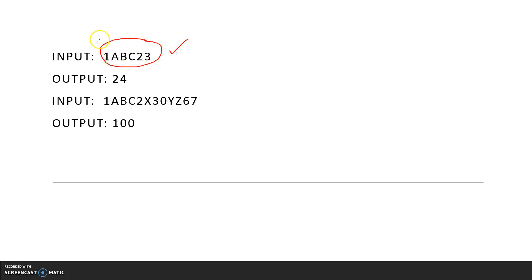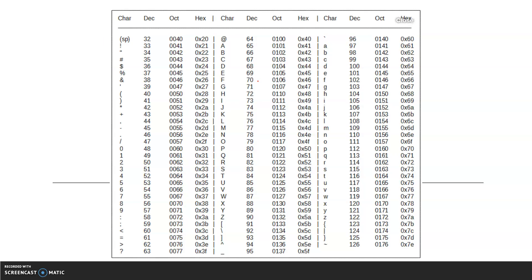First, we will traverse from the beginning to the end of the string and examine each character. We will extract one character at a time, then check whether that character — when converted to an integer — lies in the range 0 to 9, or in ASCII terms, whether it lies in the range 48 to 57.